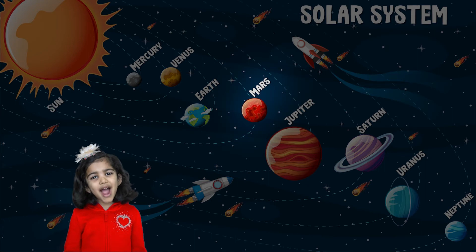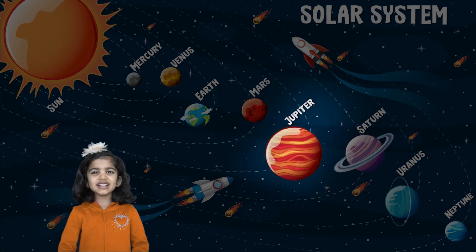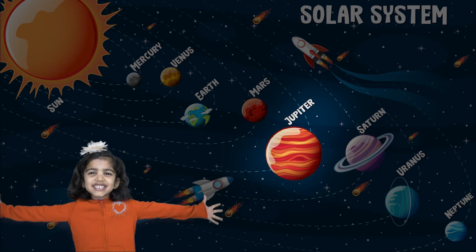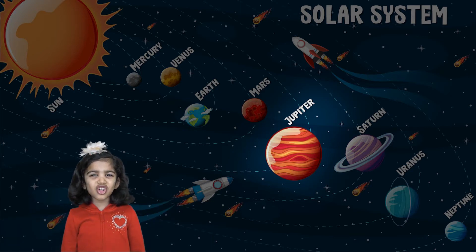Mars, Mars is a red planet. Jupiter, Jupiter is the largest planet in the solar system.